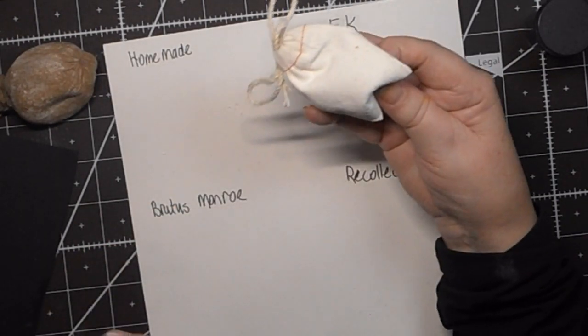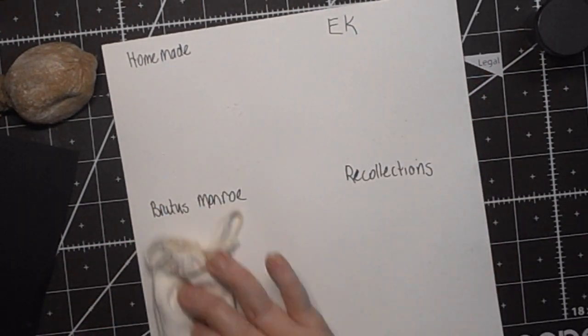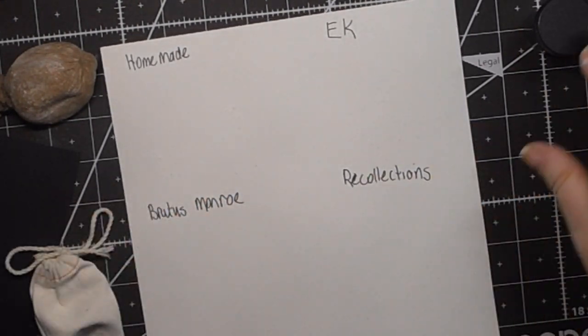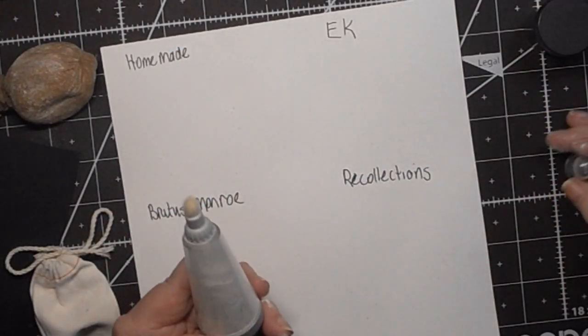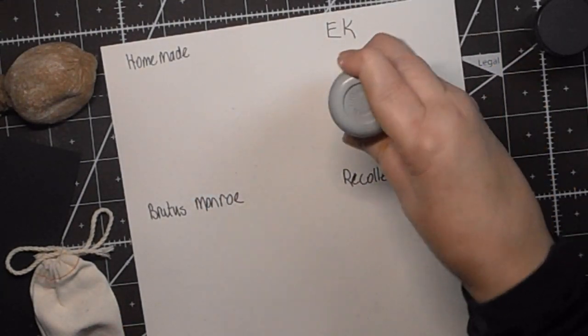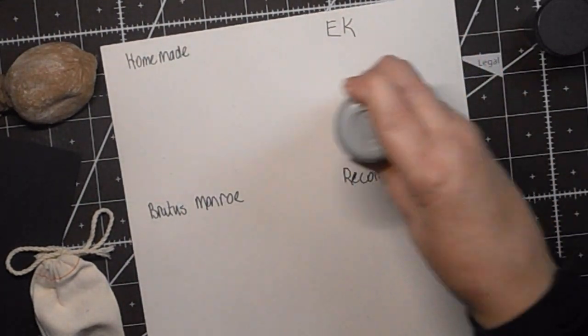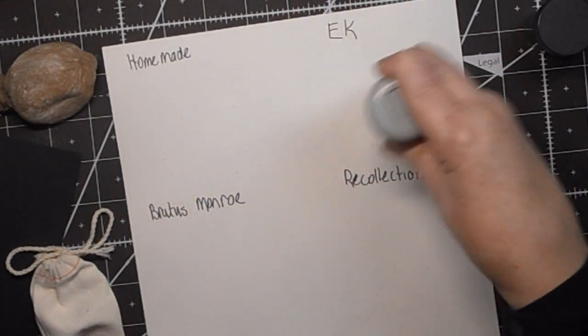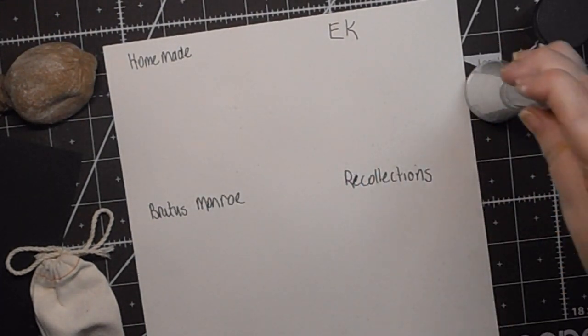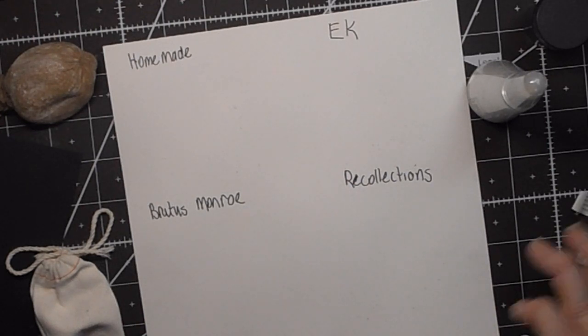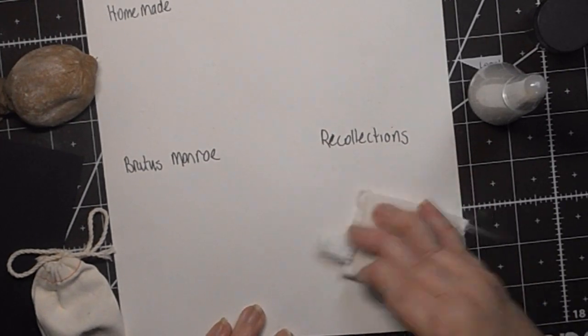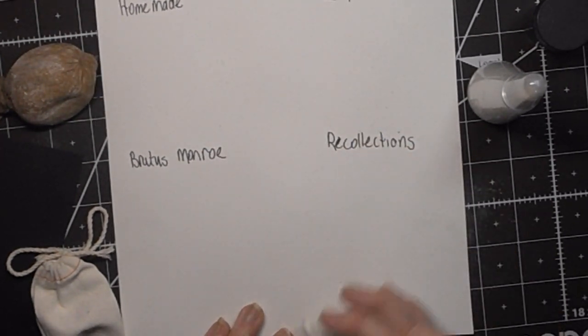This is the Brutus Monroe pouch and I'm just going to put it right there. Then this is an EK tool. I don't know if you, it used to be that Jennifer McGuire used to use this. This is the only one of the four of them that smells and it smells like baby powder to me. And then this is Recollections and it's just a pouch like the other ones.